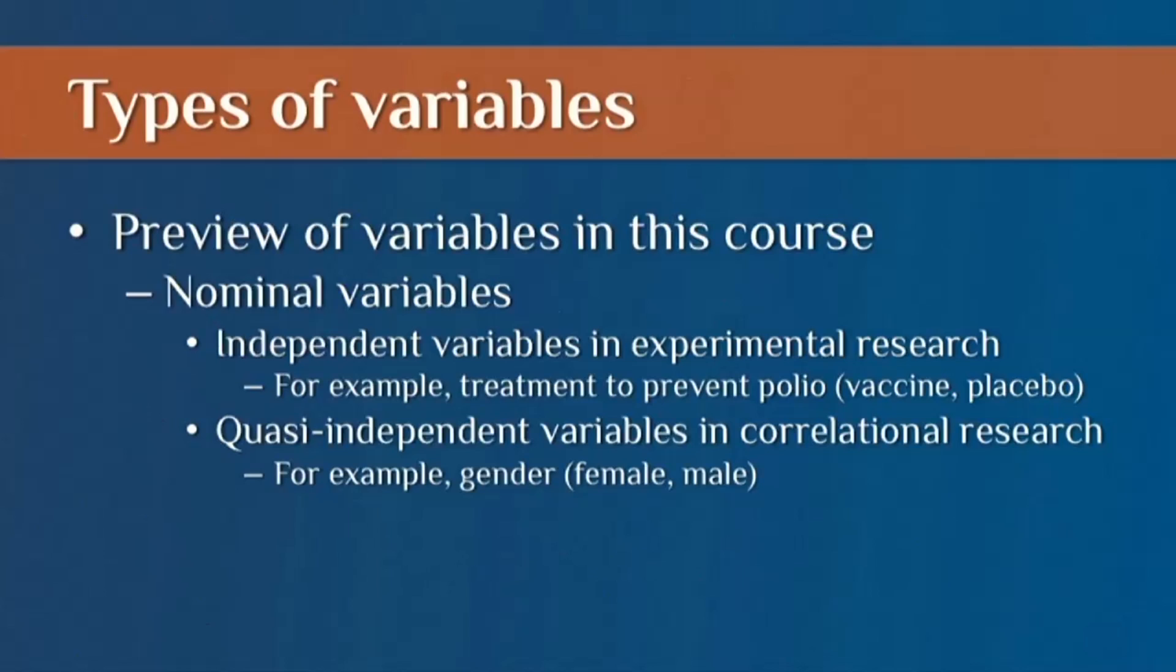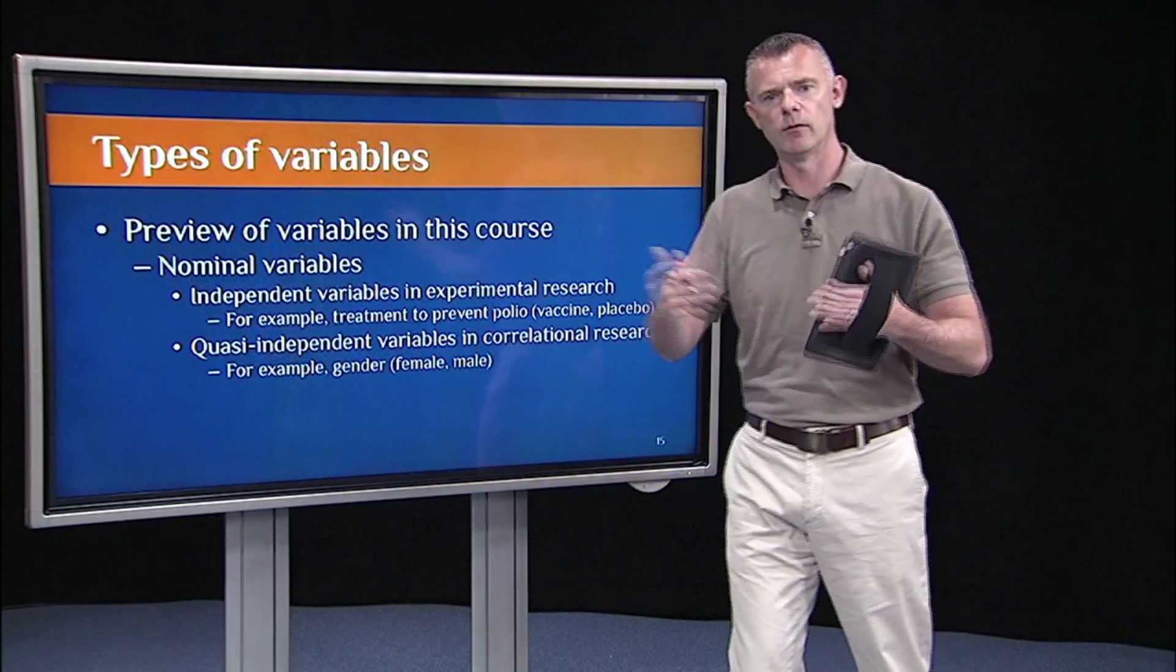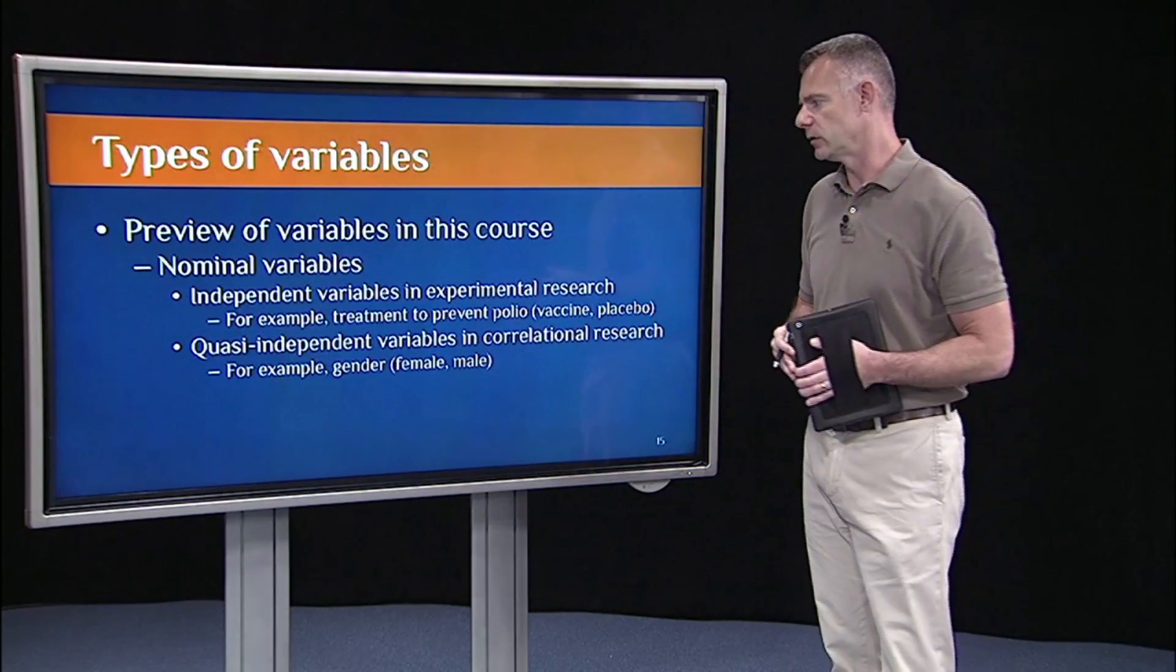That's a nominal variable. They either got vaccine or placebo, like the memory training experiment. They either got training or they didn't get training. That's just a nominal variable. Subjects are randomly assigned to one of those two conditions.